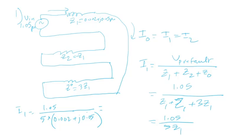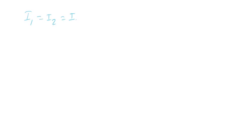For a line to ground fault, I0 = I1 = I2. The sequence current I1 equals the pre-fault voltage divided by Z1 + Z2 + Z0. Since Z2 = Z1 and Z0 = 3×Z1, the denominator is 5×Z1. So I1 = 1.05 / (5 × (0.002 + j0.05)) per unit. Converting the impedance to polar form: 0.05004 at an angle of 87.7°. Carrying out the calculation gives I1 = 4.1966 per unit.